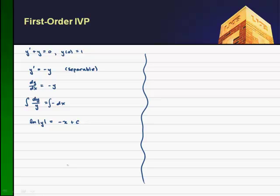We look at the initial condition, which tells us that when x is 0, y is 1. So 1 is positive, and we're taking the natural log of positive y equals negative x plus c. Let's apply the condition. When y is 1 and x is 0, we get natural log of 1 equals c, so c equals 0.